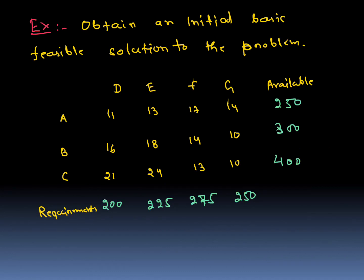The first example is: obtain an initial basic feasible solution (IBFS) to the problem using the North West Corner method. First I will check the supply and demand to see whether it is balanced or not.